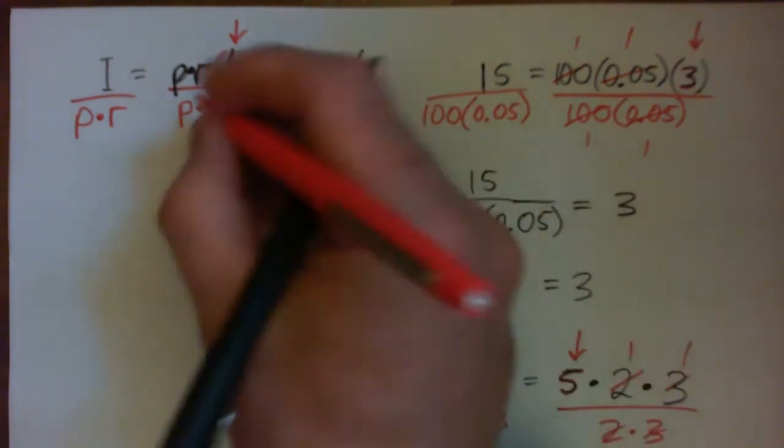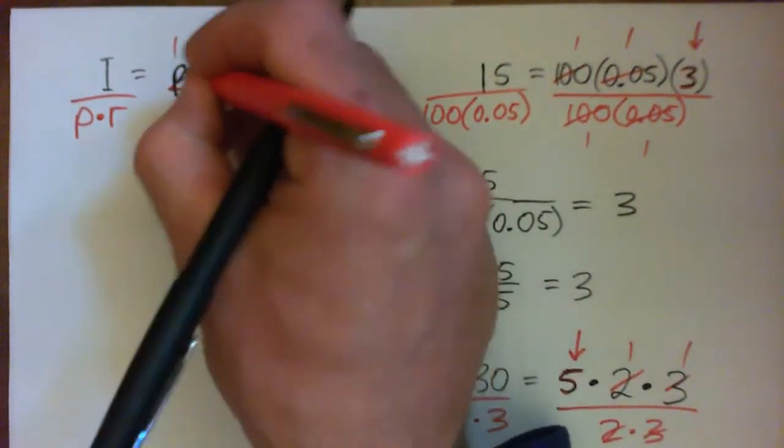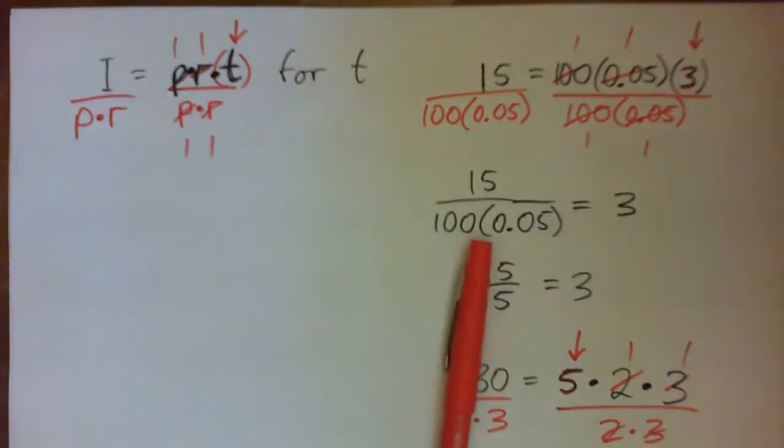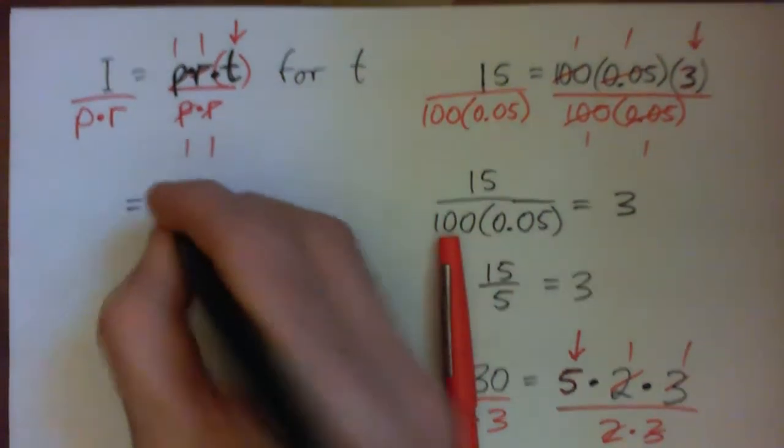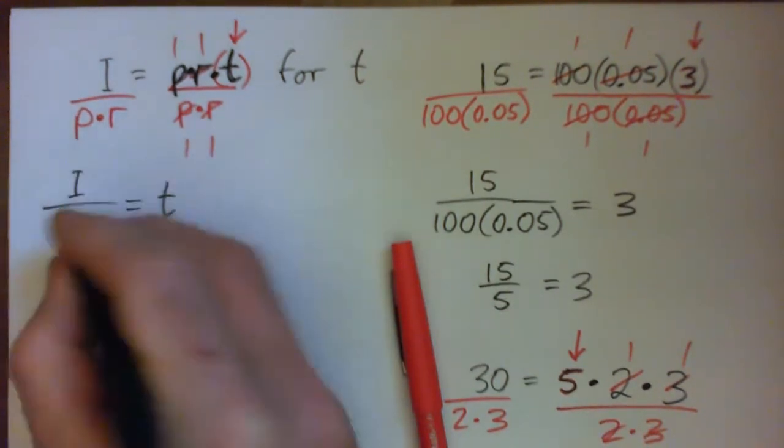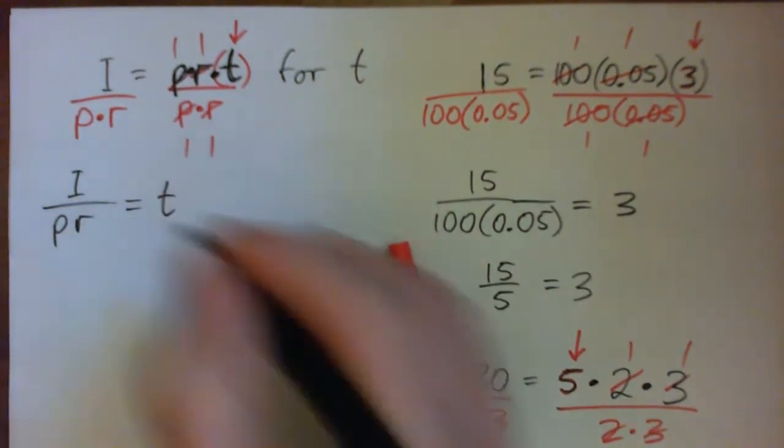And if you do that, the P's cross-cancel, great. The R's cross-cancel, great. So those complications are taken out of our life. And now we have T over here. And so we have I over P times R, or I over PR equals T.